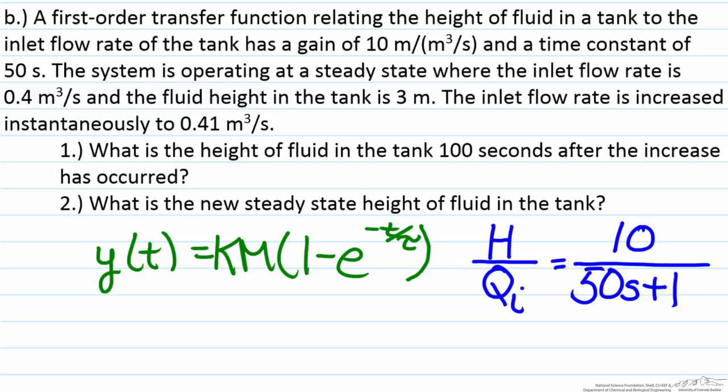So the first question is what is the height of the fluid in the tank a hundred seconds after the increase has occurred. So in order to analyze this we are going to substitute in our variables here, which are k which is the steady state gain of the process, that is ten, m which is the magnitude of the step change, so here the problem statement states that it has increased instantaneously from .4 to .41, therefore our change in magnitude is 0.01, and that our tau in this problem is given as fifty seconds.